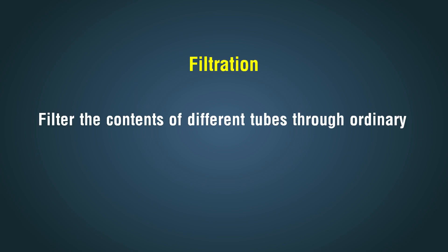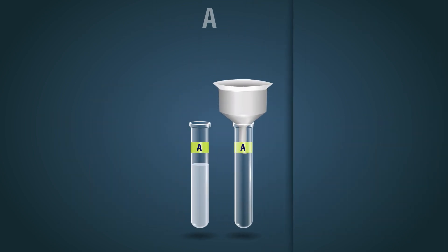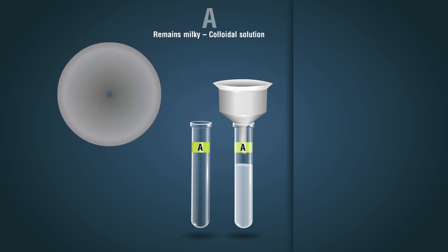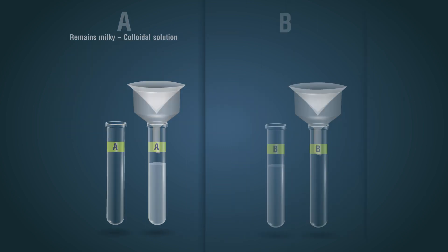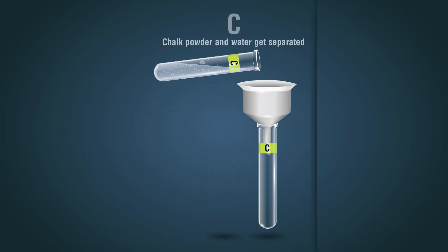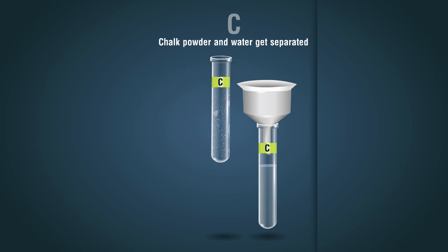Filter the contents of different tubes through ordinary filter paper. A: remains milky, colloidal solution. B: clear solution. C: chalk powder and water get separated.